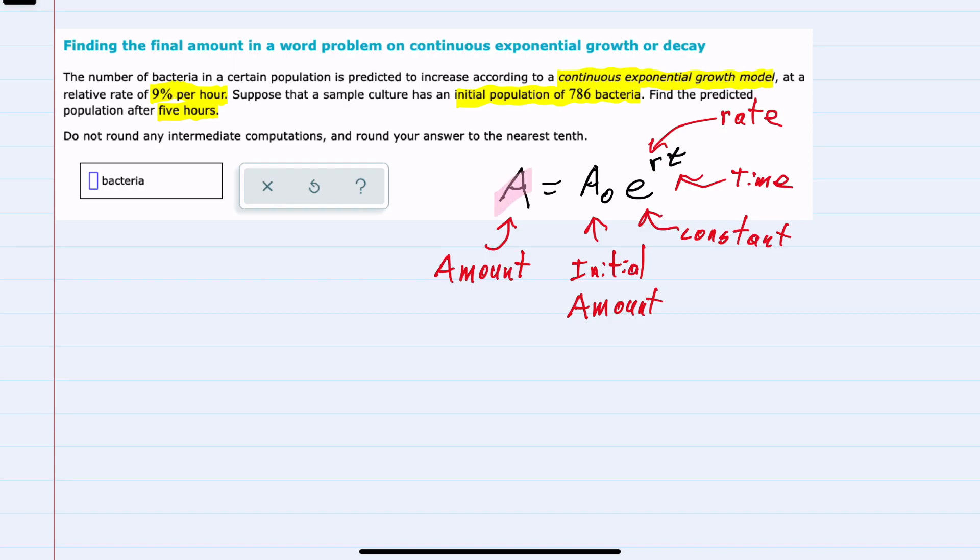For this example, we are looking for the final amount A, knowing that the initial amount A₀ is 786 times our constant e